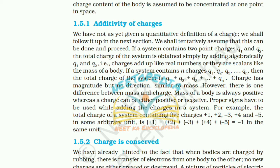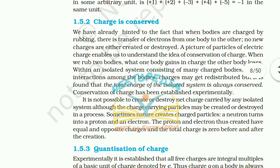If a system contains n charges q1, q2, q3 up to qn, the total charge is q1 + q2 + q3 + ... + qn. Charges have magnitude but no direction, similar to mass. However, unlike mass which is always positive, charge can be positive or negative. Proper signs have to be used while adding charges. For example, the total charge of a system containing five charges +1, +2, −3, +4, and −5 in some arbitrary unit is +1 + 2 − 3 + 4 − 5 = −1 in the same unit.